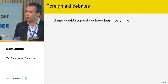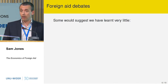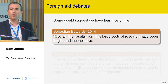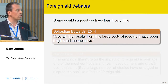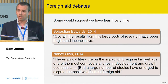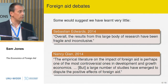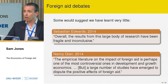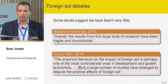As a result of this disagreement, many would conclude we haven't really learned a great deal from this research. Two more recent contributions from distinguished economists point to that conclusion. Sebastian Edwards in 2014 writes: 'Overall, the results from this large body of research have been fragile and inconclusive.' Nancy Kean, in a review article published last year, says the empirical literature on the impact of foreign aid is perhaps one of the most controversial in development and growth economics, and a large number of studies have emerged to dispute the positive effects of foreign aid.